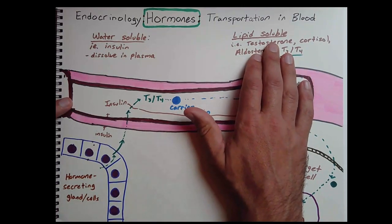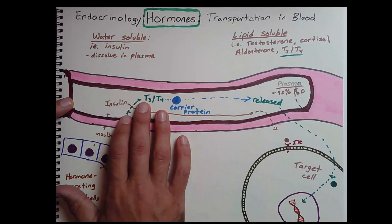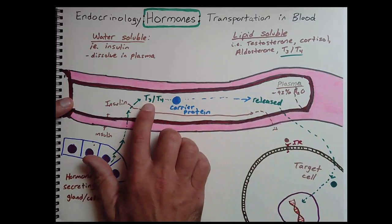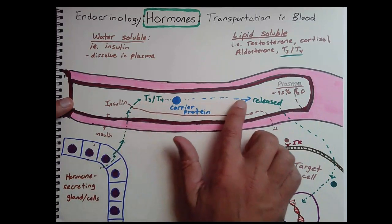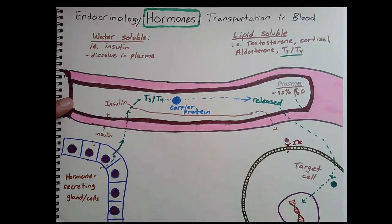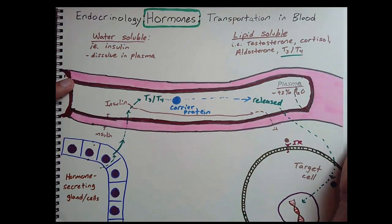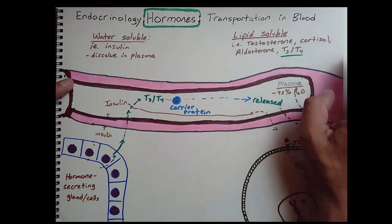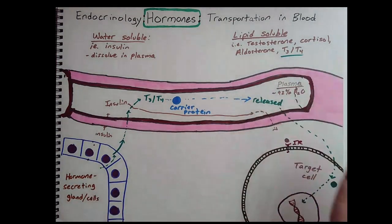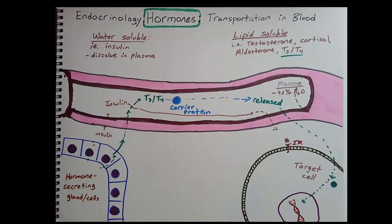Again, if we have a lipid-soluble hormone, this hormone can diffuse out of the hormone-secreting glands into the plasma. But the plasma is 92% water, so it cannot dissolve. So what does it need to be transported through the blood? It needs an Uber. That's how I teach all my students. It's an easy way to remember. These Lyfts are carrier proteins. And each lipid-soluble hormone has its own carrier protein. For instance, testosterone-binding globulin, cortisol-binding globulin, T3, T4 thyroxin-binding globulin. So these carrier proteins are going to be binding to these different globulins.